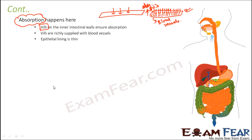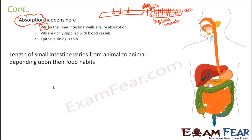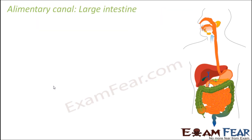The length of the small intestine varies from animal to animal depending on their food habits. Animals that eat more plants or grasses, which contain more cellulose that takes longer to digest, have a very long small intestine. Animals that eat flesh, which does not contain cellulose and is easier to digest, have a shorter small intestine. The small intestine performs one of the most crucial roles in the entire process of digestion.